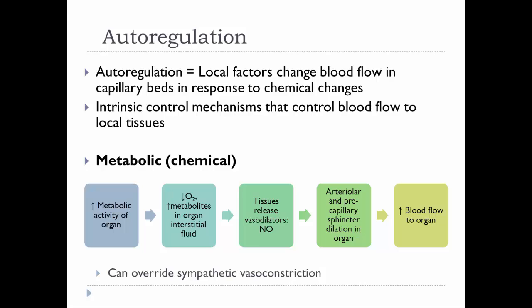For example, let's say you're exercising and we're looking at the skeletal muscle actively involved. That muscle has higher metabolic activity, meaning low oxygen and high metabolic waste products — think CO2 and lactic acid buildup. In response to those low oxygen levels or high CO2 and metabolite levels, the tissue releases a vasodilator called nitric oxide. In response to nitric oxide, the arterioles and precapillary sphincters dilate, getting bigger in diameter, so more blood flow goes into that muscle to provide more oxygen and nutrients for effective exercise.